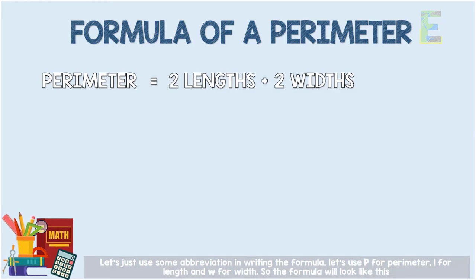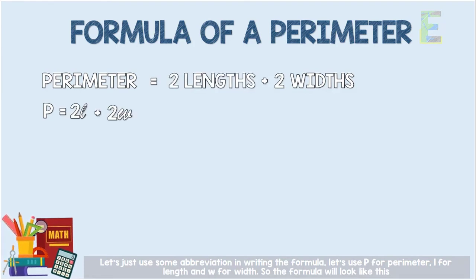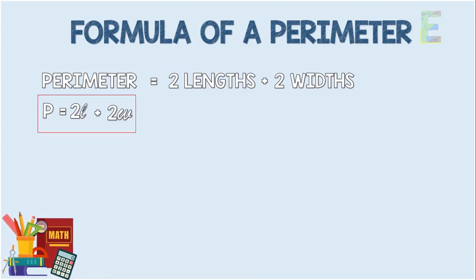Let's use some abbreviations in writing the formula. Let's use P for perimeter, L for length, and W for width. So the formula will look like this: P is equal to 2L plus 2W.